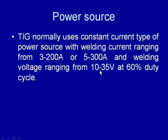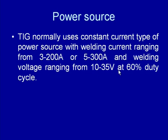The reason the GTAW process works at low voltages is that tungsten has very good electron-emitting capability, providing a large number of charge particles in the arc gap, enabling a smooth and stable arc even at low voltages. In contrast, SMAW and GMAW processes use consumable electrodes of iron or aluminum, which have poor electron-emitting capability, requiring higher arc voltages to maintain the arc and prevent it from extinguishing.